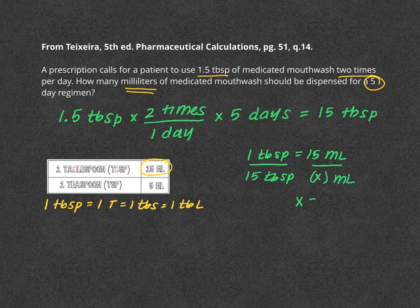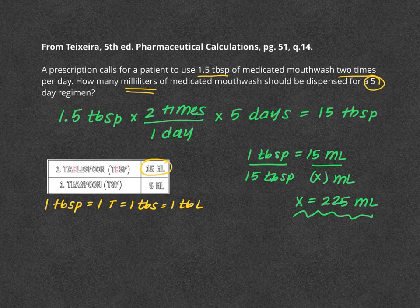Cross multiplying, X equals 225 milliliters. This means that for a five-day supply of our medicated mouthwash, we would need a total of 225 milliliters to be dispensed.